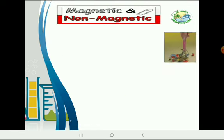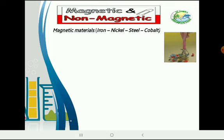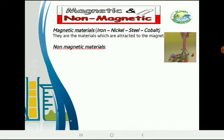We can classify materials into magnetic and non-magnetic. The magnetic materials — like iron, nickel, steel, and cobalt — are materials which are attracted to the magnet. The non-magnetic materials are materials which are not attracted to the magnet.